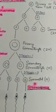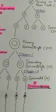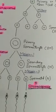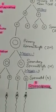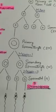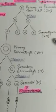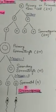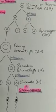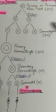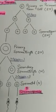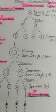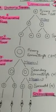Spermatate formation can be subdivided into three phases: multiplicative phase, growth phase, and maturation phase. This process actually occurs in seminiferous tubules, and these tubules are lined by germinal epithelium. The germ cell is going to enter mitosis here.